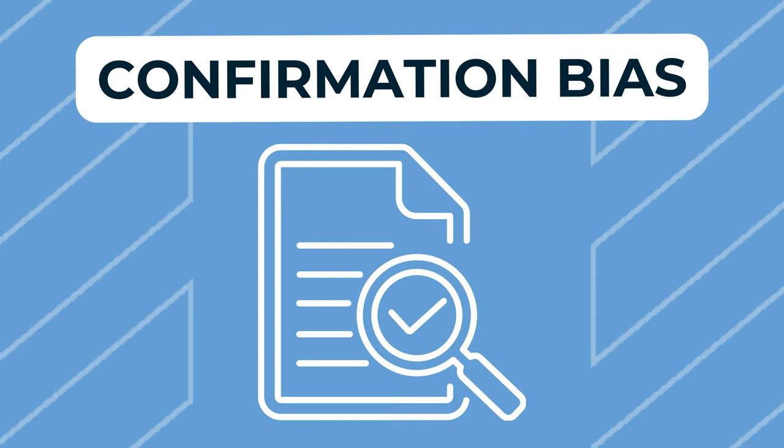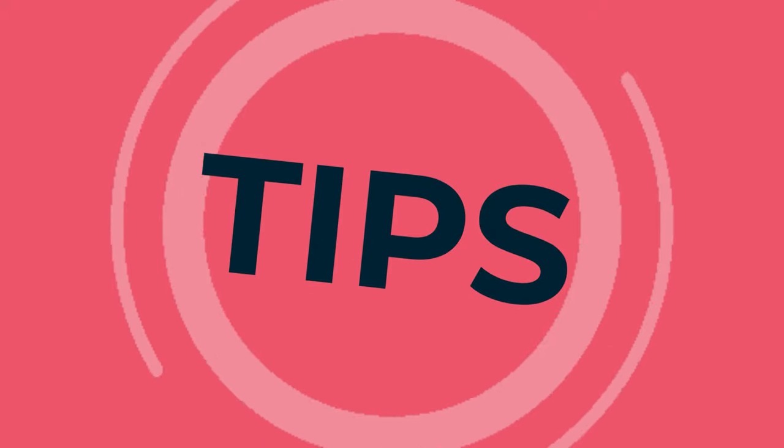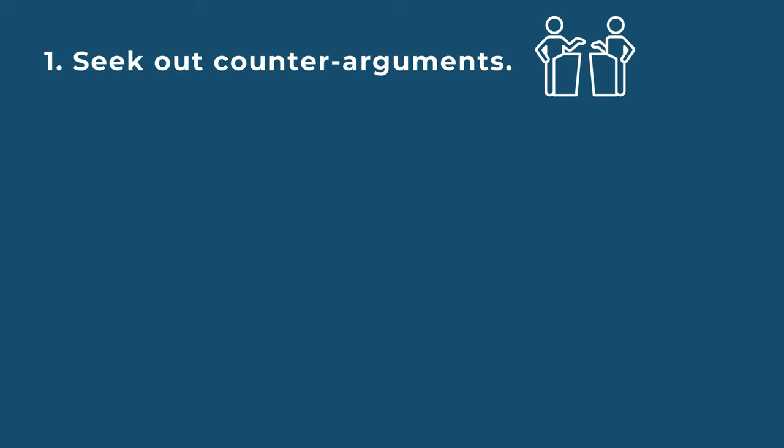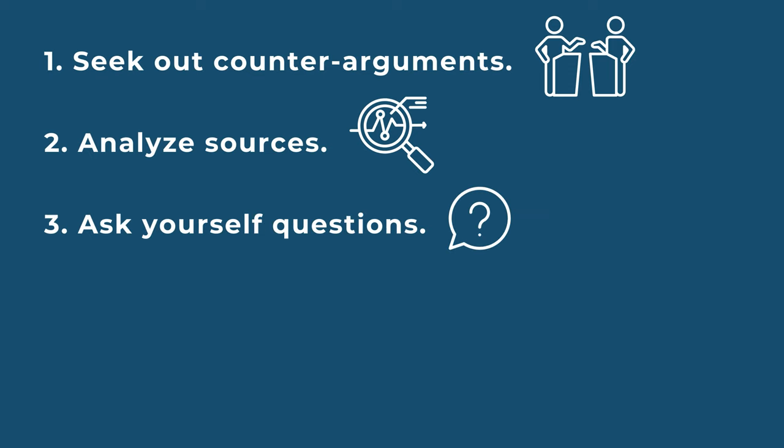Some tips to help remove this bias include seeking out and addressing counter arguments, analyzing sources with confirmation bias in mind, and asking reflection questions about how and why you chose your sources.